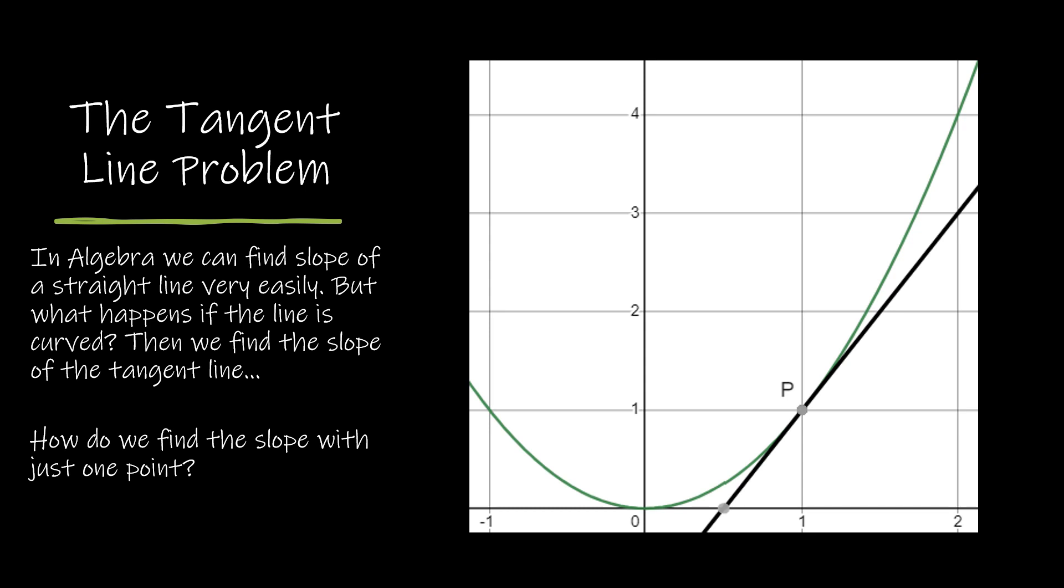The first big problem is the tangent line problem. We know how to find the slope in algebra. To find the slope of a line, we just take y2 minus y1 over x2 minus x1. However, if I want to find the slope of a tangent line, I only have one point. In this case, the point is P. So how can I find the slope with just one point?